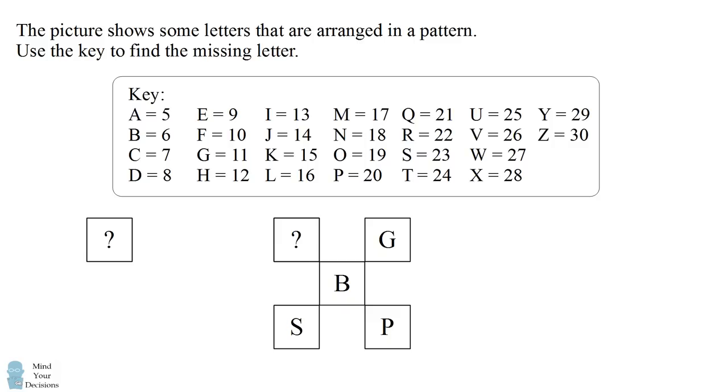We'll first convert the letters to numerical values. G is equal to 11, B is equal to 6, S is equal to 23, and P is equal to 20. What could the pattern be?